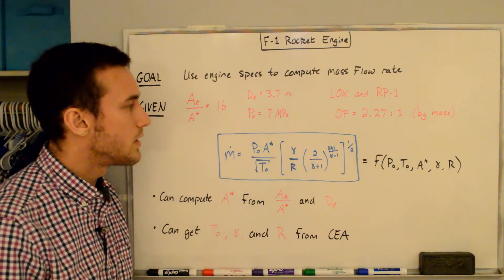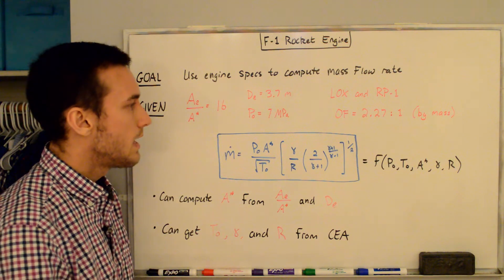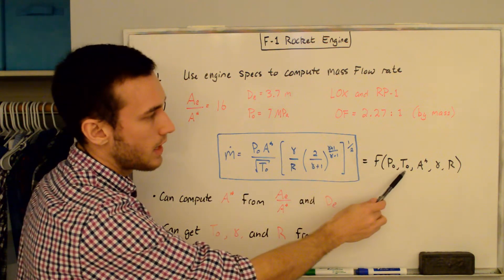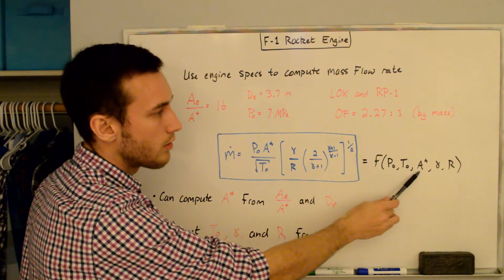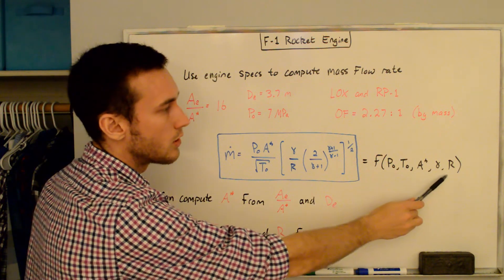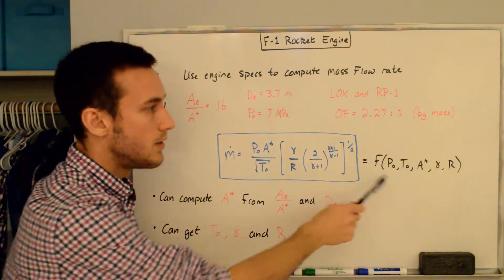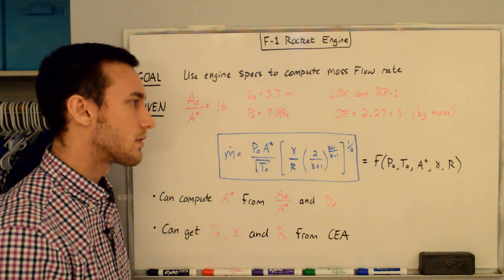Here you can see the mass flow rate equation that I derived in my previous video. It's a function of the stagnation pressure, stagnation temperature, throat area, specific heat ratio, and the specific gas constant. So we need to know these five variables in order to compute the mass flow rate.